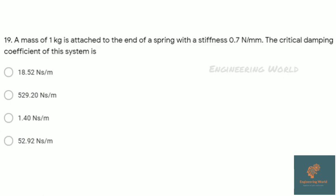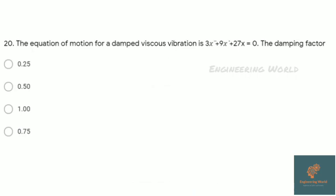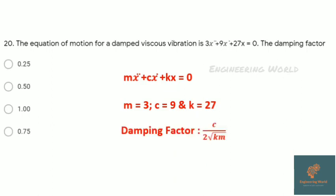The equation of motion for a damped viscous vibration is 3ẍ + 9ẋ + 27x = 0. By comparing with the standard equation, we get m=3, c=9, k=27. We know that damping factor ζ = c/(2√(km)). All values are given, we just have to put the values in the formula. We get damping factor ζ = 0.5.